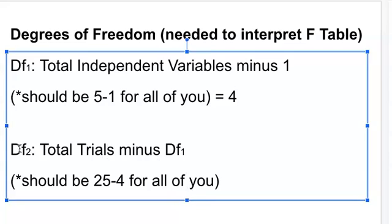Then you have DF2, which is the total trials minus DF1. So what was your total trials? It should have been 25 total, right, because there were five trials for each of the five groups, which equals 25. Subtract DF1, so subtract 4, and then you end up with 21.